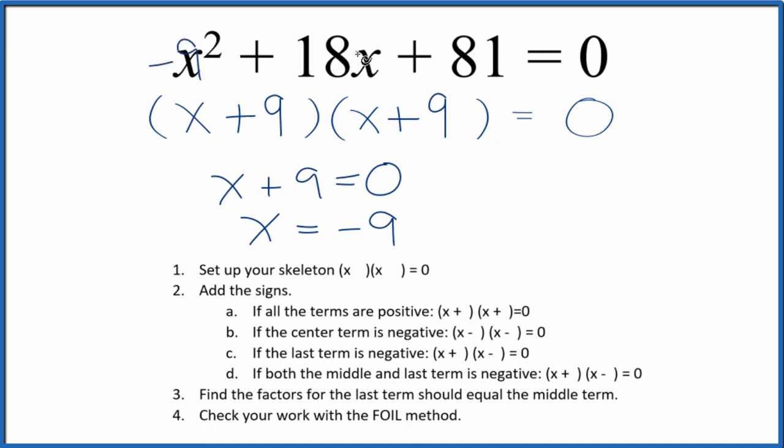And if you put negative 9 in for x and you did the math, all of this would equal 0. So we did this correctly.